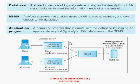Before I go into detail, please see this image where we can see how a DBMS actually works. A DBMS is divided into two parts: one is MS and another one is DB. DB means database and MS means management system. A database is a shared collection of logically related data and a description of this data, designed to meet the information needs of an organization.